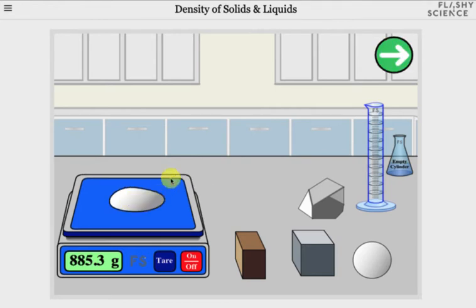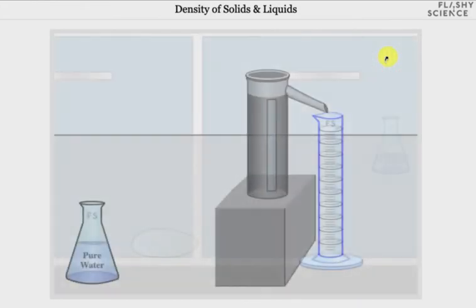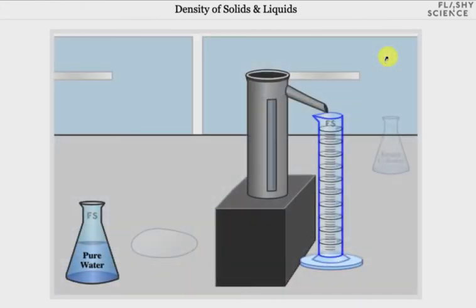Click again on the green and white arrow icon to move to the volume screen for irregular objects. You will now see a displacement tube with a spout above an empty measuring cylinder. There's also a flask of pure water, your chosen object, and a flask for emptying the cylinder.